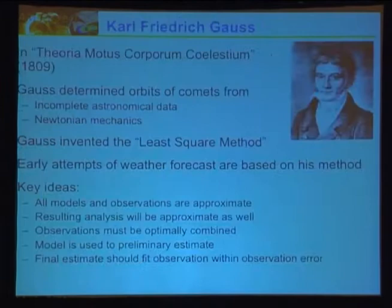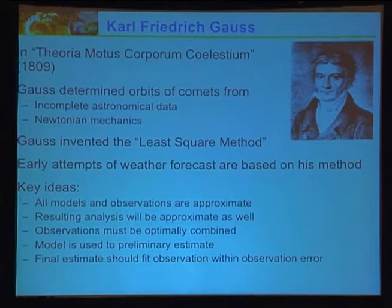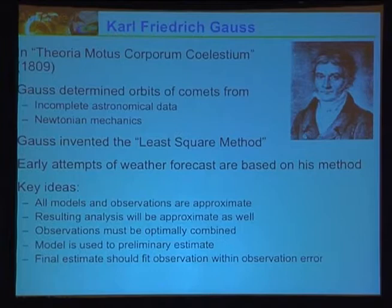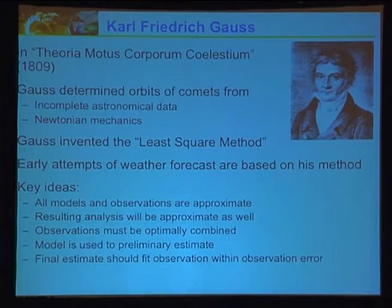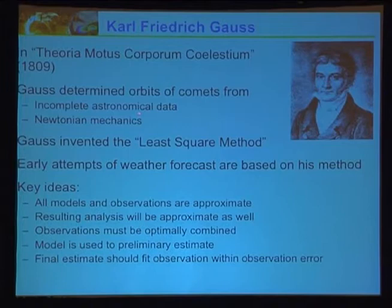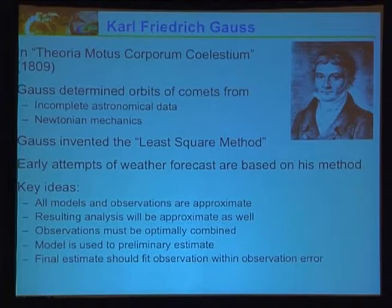We're going to talk about ensemble-based methods, specifically ensemble Kalman filter-based methods. One of the main contributors for Gaussian theory was Carl Friedrich Gauss, who worked on astronomical problems. Gauss determined orbits of comets from incomplete astronomical data and Newtonian mechanics using a least squares method — minimizing the distance between observation and model in a least squares sense.